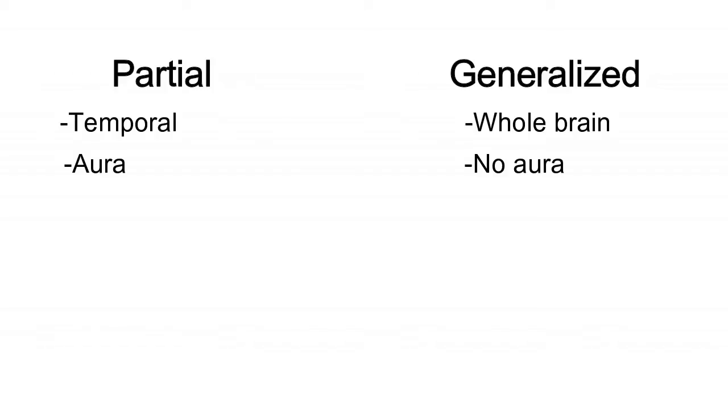There are three subtypes of partial seizure: simple, meaning the patient is conscious during the attack; complex, meaning the patient is unconscious during the attack; or secondary generalized, meaning the seizure will proceed to become generalized.